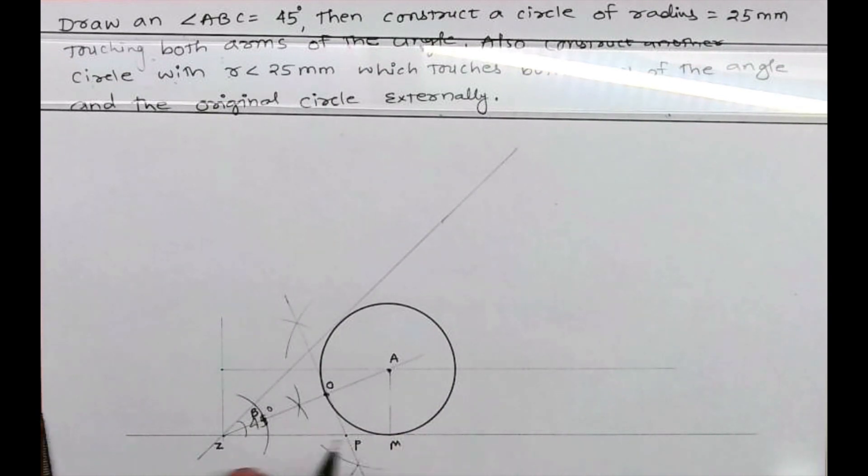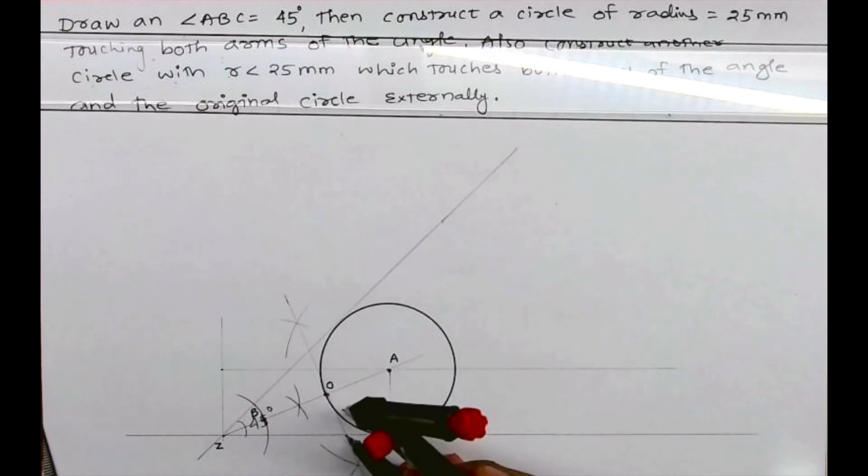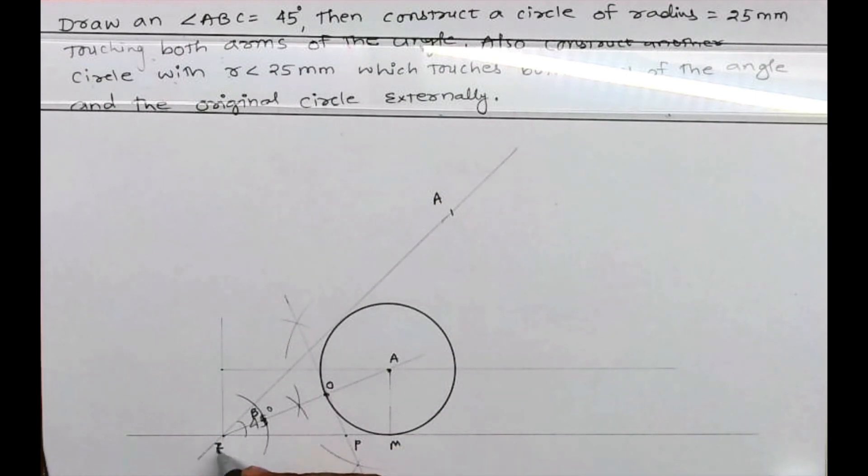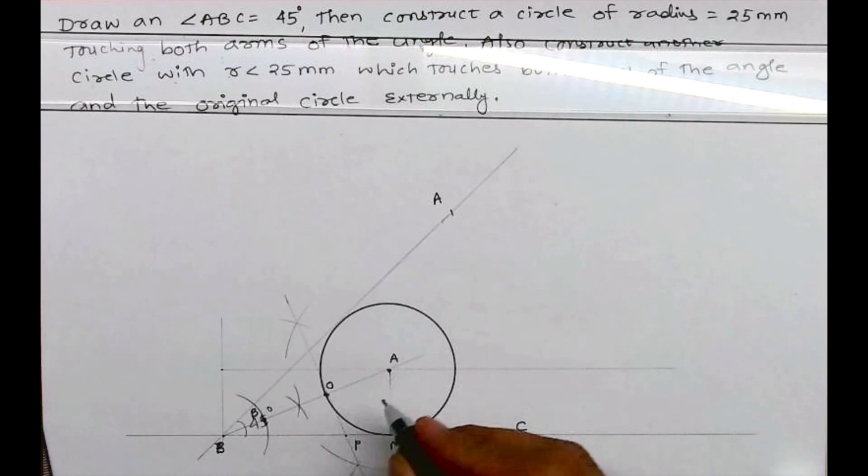Now this is point B. We'll bisect angle OPB. Let's see, if I name this original angle, then it is ABC. This is A, B and C. Let me write this initial AB as A' and B'.